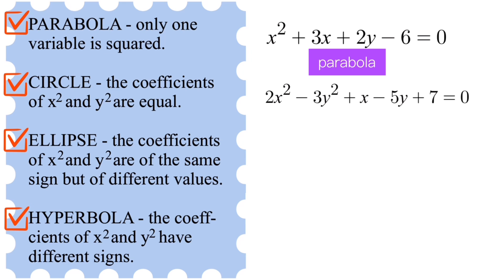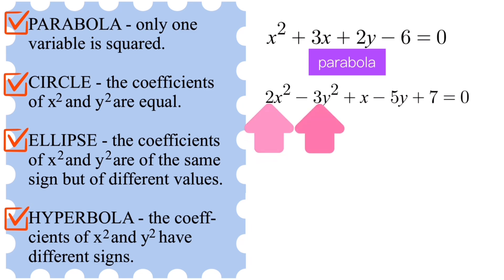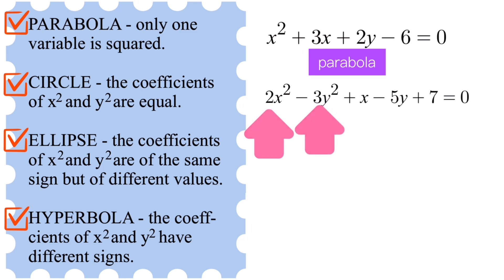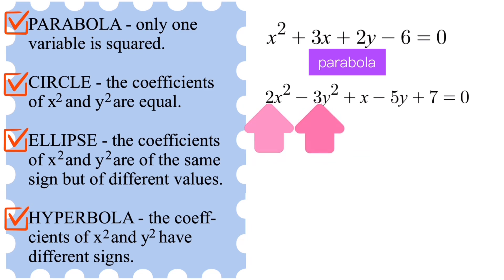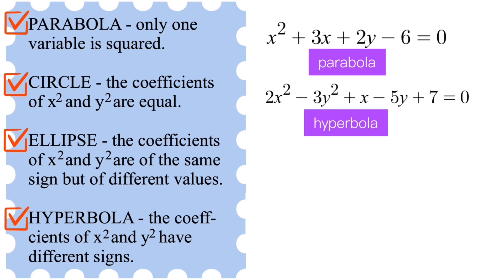In this second example you can see that the coefficients of x² and y² have different signs. The other one is a positive 2 while the other one is negative 3. Since the coefficients of the squared variables have different signs, this is an example of a hyperbola.